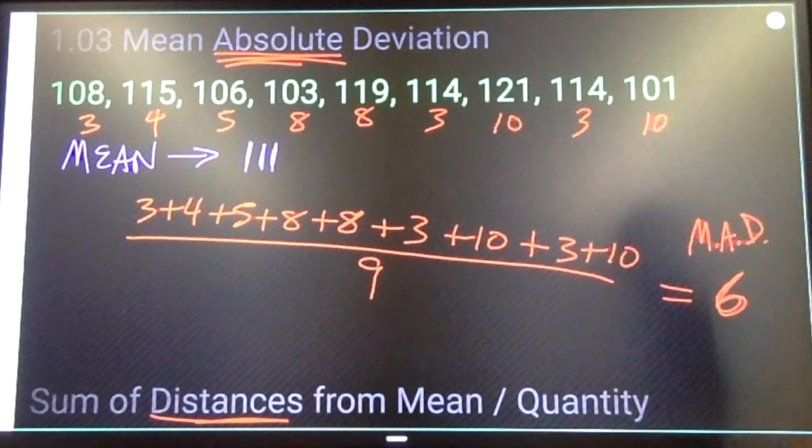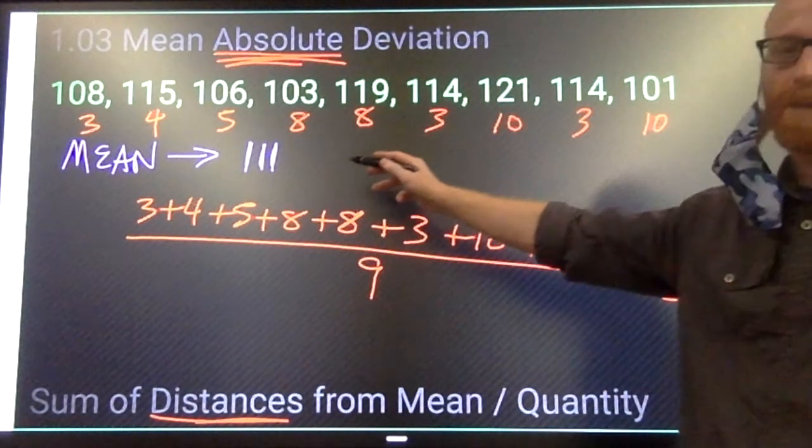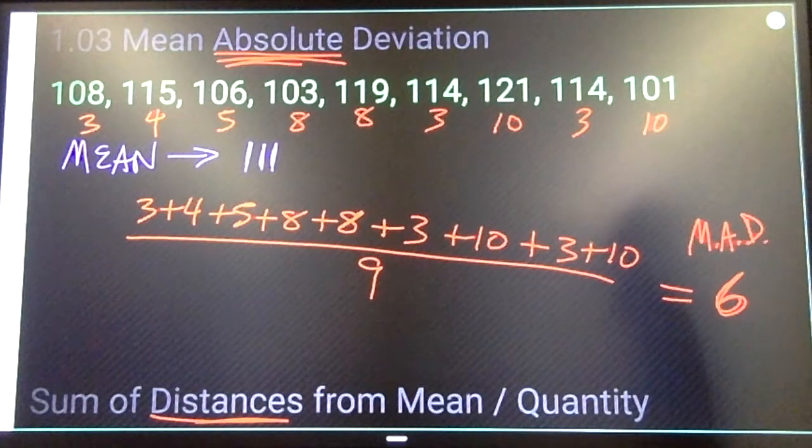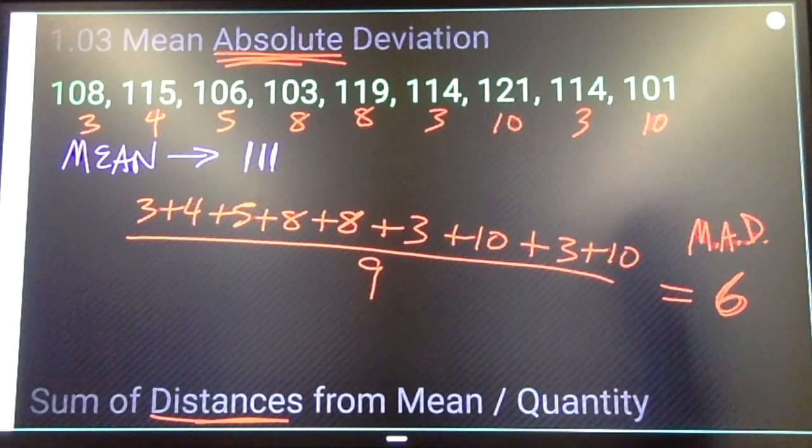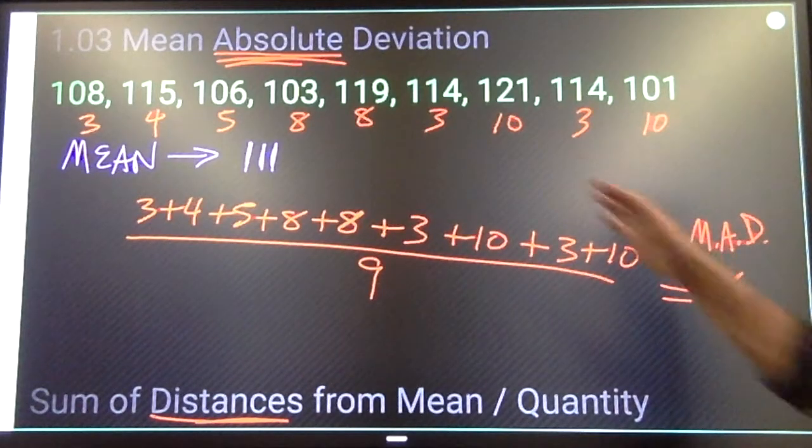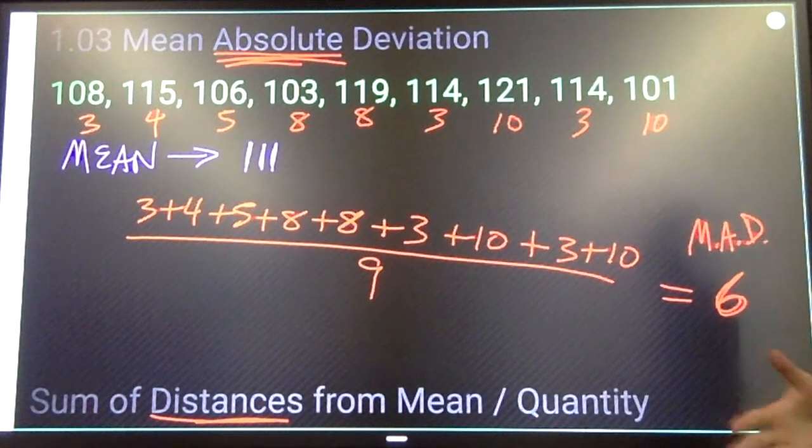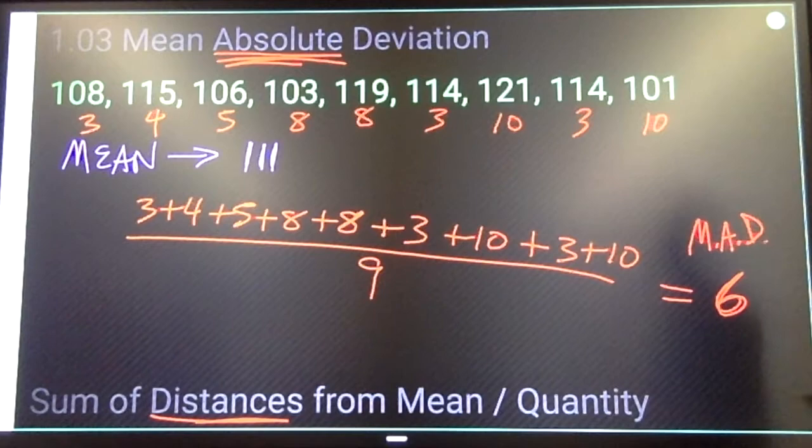Mean absolute deviation helps us to tell, for example, if a number is too far outside of the pack to be reasonable.